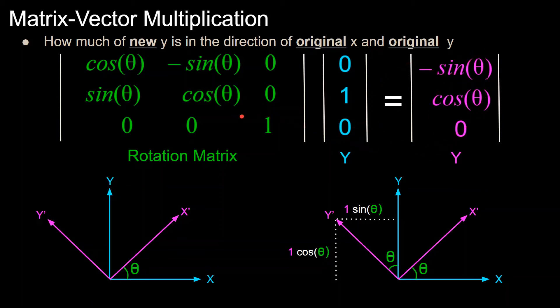So, again, just doing the matrix vector multiplication, we get cosine theta times 0, 0, plus negative sine theta times 1 is negative sine, 0 times 0, 0. You get negative sine. Next one, we go sine theta times 0, 0. Cosine theta times 1 is cosine theta, plus 0 times 0, 0. So, we get cosine theta. And same thing, all zeros for the last one.